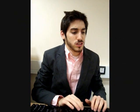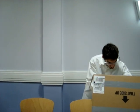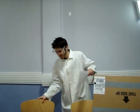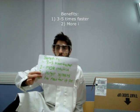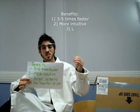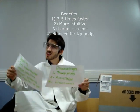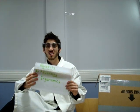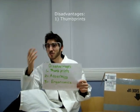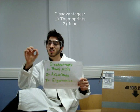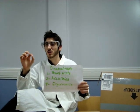What are the advantages and disadvantages of the system? The benefits are that it's three to five times faster than a mouse, it's more intuitive, there are larger screens, and there's no need for input peripherals. The disadvantages are that fingerprints appear on the screen, there's difficulty selecting the correct objects on the screen, and there is, of course, an ergonomics issue.